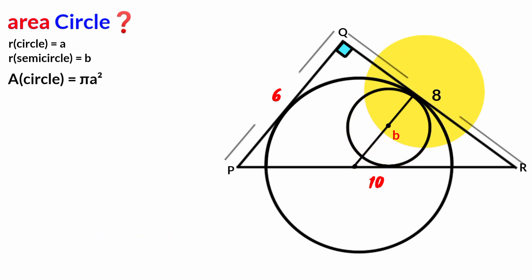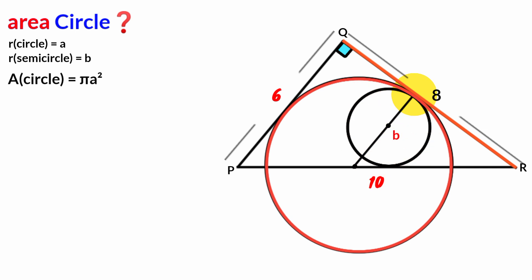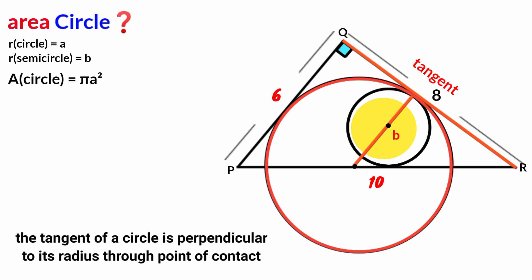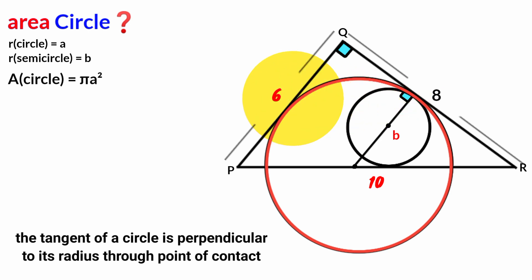This line touches the circle at a point, which makes it a tangent of the circle. It intersects the radius at the point of contact. From circle theory, the tangent of a circle is perpendicular to its radius through the point of contact. So this tangent is perpendicular to this radius, giving us a right angle here.